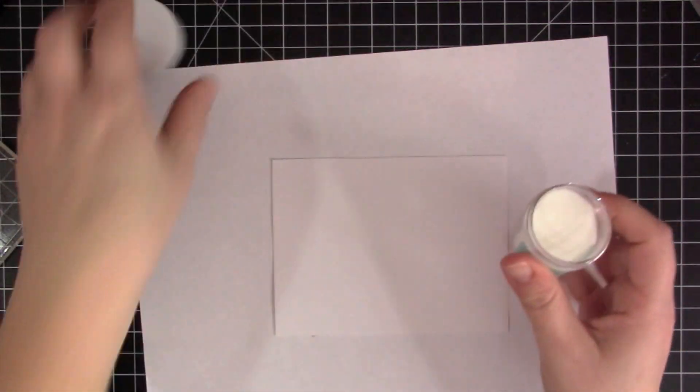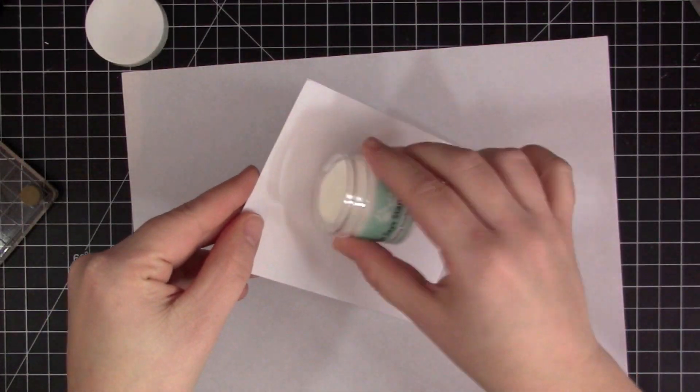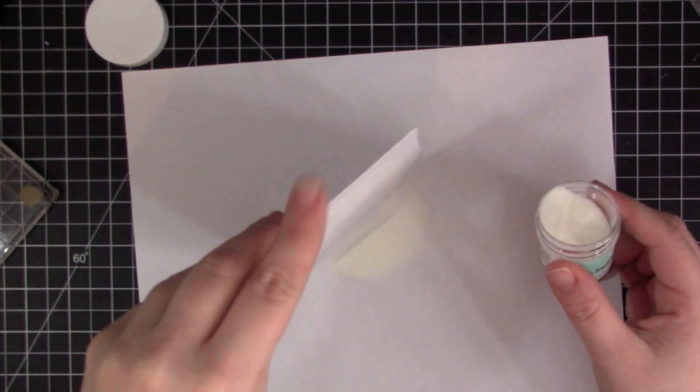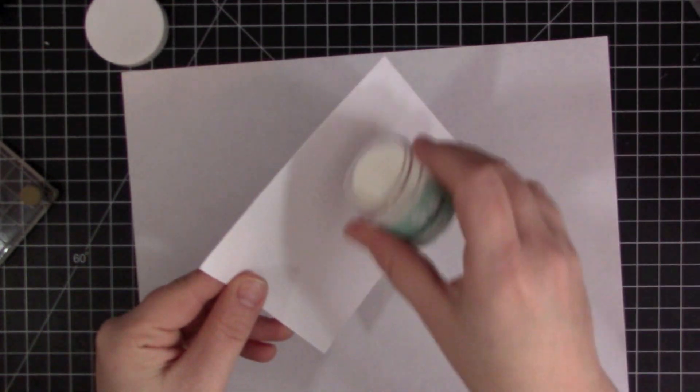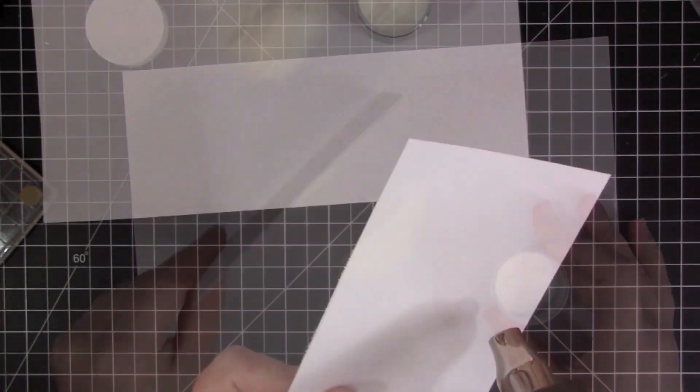Now I'm going to cover this piece with Simon Says Stamp clear embossing powder, which also comes in this month's kit. You're not really going to see it too well, but you can kind of see it when I tilt it in the camera. I've completely covered that stamped image.